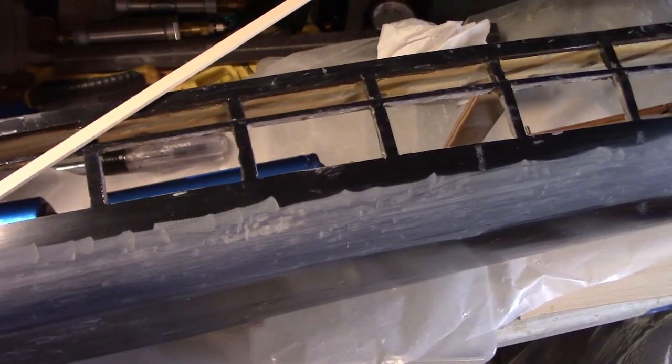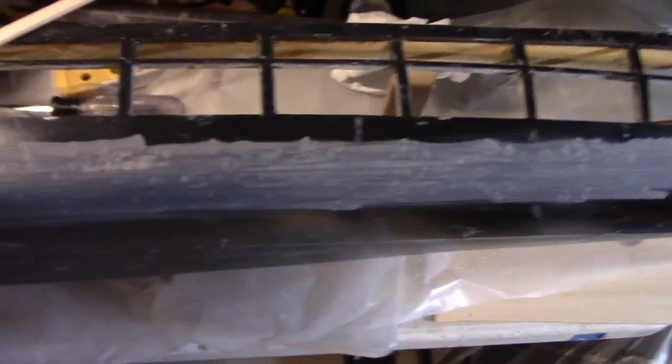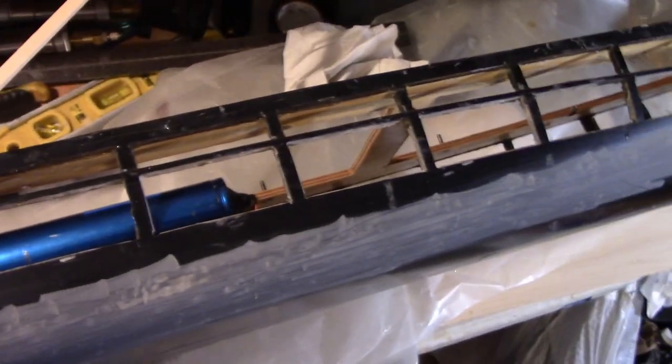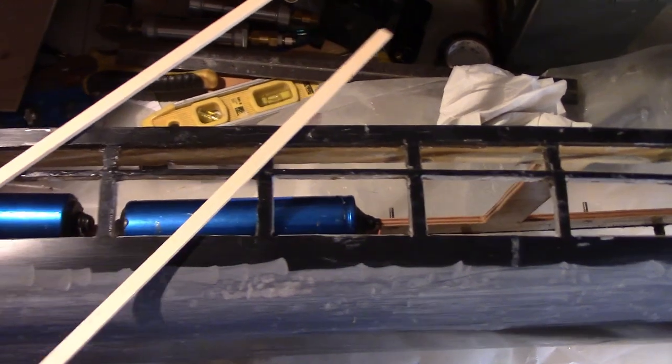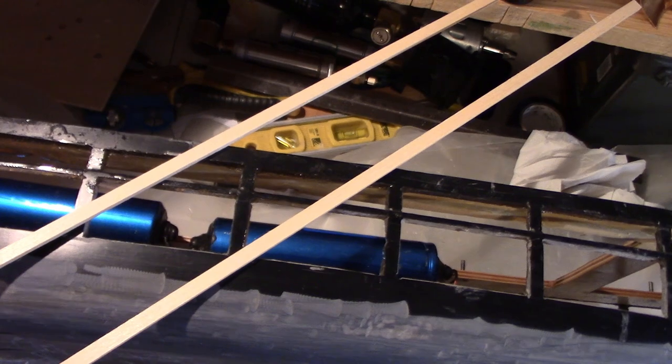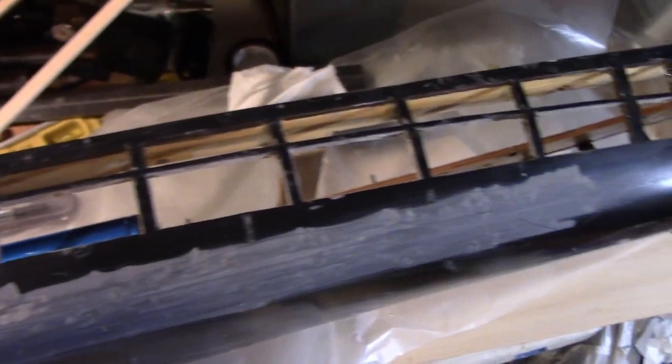The applicable rules for bilge keels are that they can't extend more than three-eighths of an inch from the surface of the hull. So I'll use two quarter inch pieces at first and then I'll fiberglass those, but then I'll cut them down so it's only three-eighths inch from the hull and then I'll fiberglass the other side.